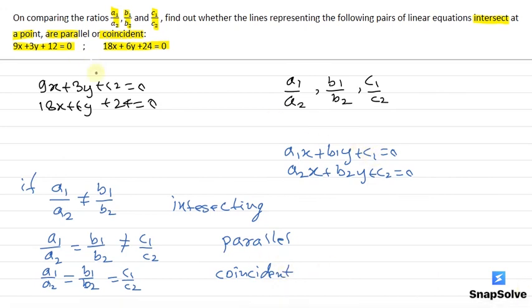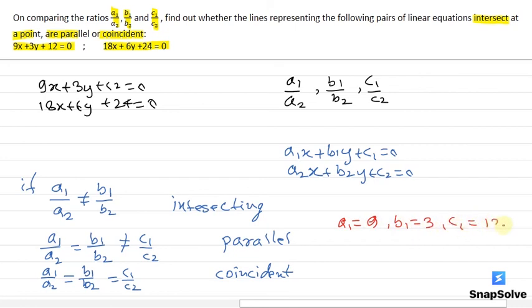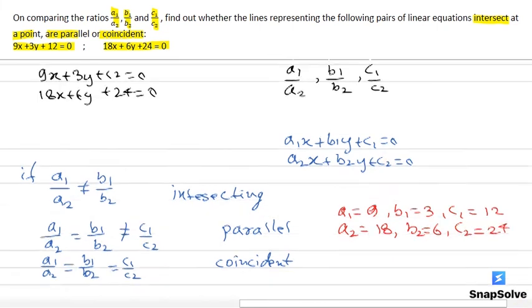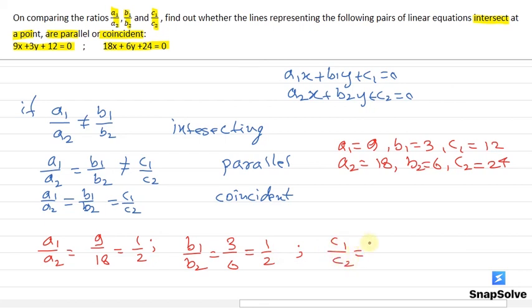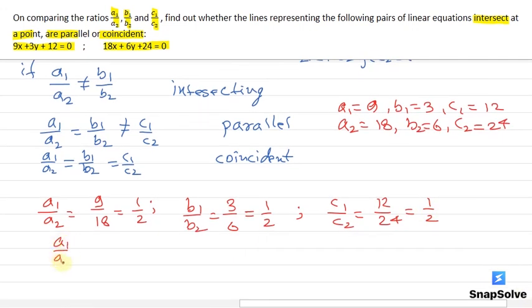If we compare these two linear equations with the general form, we get a1 equals 9, b1 equals 3, and c1 equals 12. Similarly, a2 equals 18, b2 equals 6, and c2 equals 24. The ratio a1 by a2 gives 9 by 18, which equals 1 by 2. The ratio b1 by b2 gives 3 by 6, which is again 1 by 2. And the ratio c1 by c2 gives 12 by 24, which is again 1 by 2.